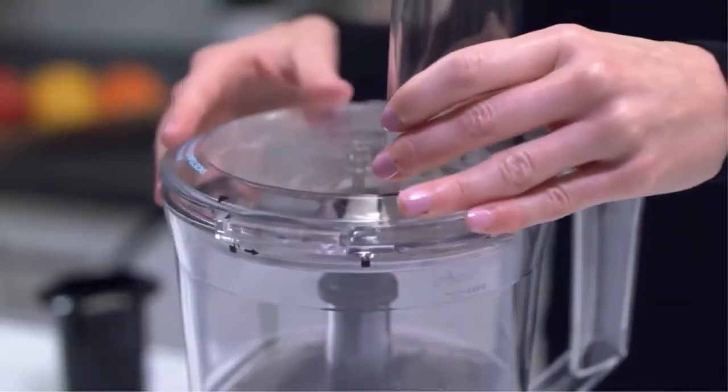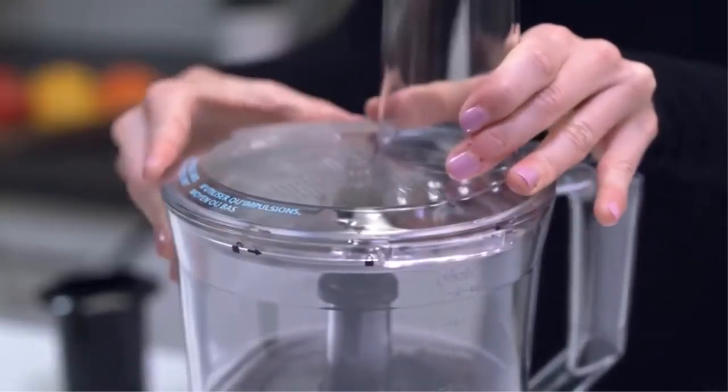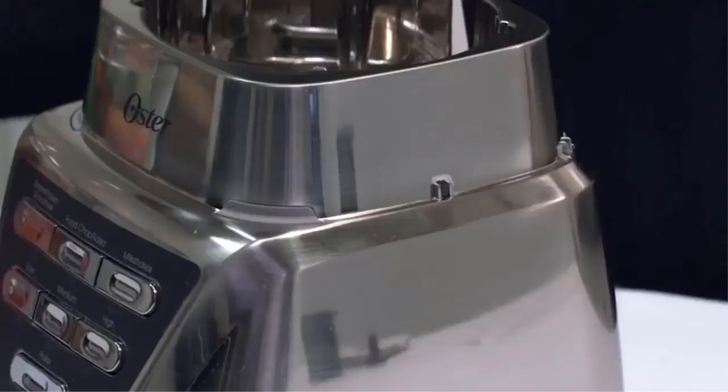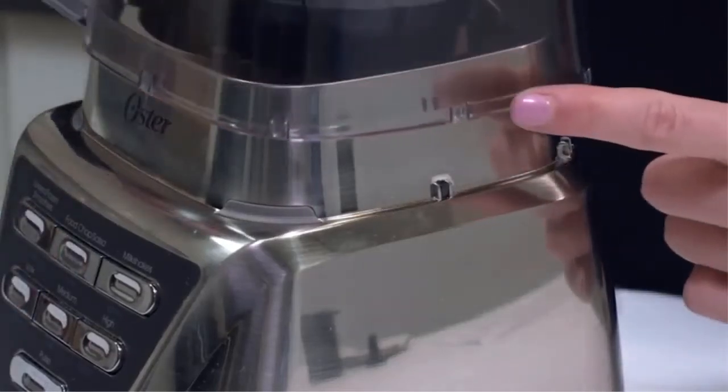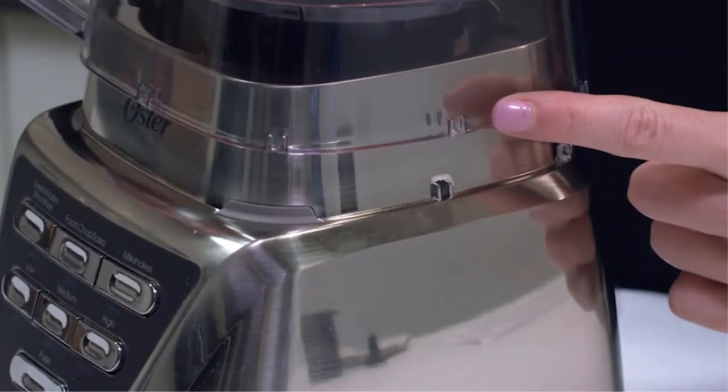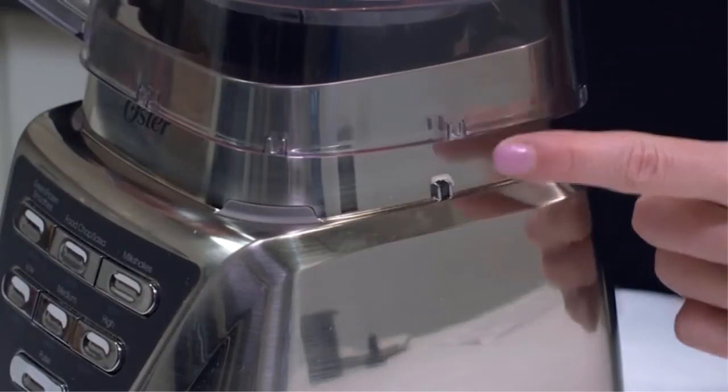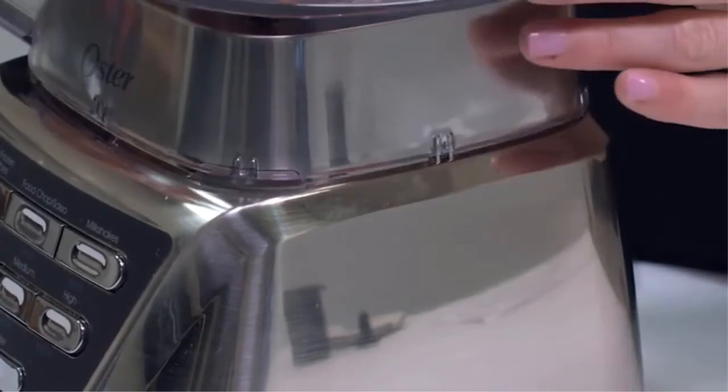To place the food processor bowl in place, identify the tabs on the side of your food processor attachment and the corresponding tabs on the side of your Oster Pro Series blender. Line them up and seat your food processor attachment in place until you hear it click. Place the food to be processed in the shoot and rest the food pusher in the shoot.